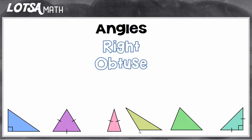The last kind is acute. If you don't see a right angle and you don't see an obtuse angle, it must be an acute triangle. Every angle inside an acute triangle must be acute. Looking at the pink triangle, that angle is acute, that's acute, and that's acute. You can't just see one acute angle and call it acute — they all have to be acute. Even just one obtuse angle makes it an obtuse triangle, and even one right angle makes it a right triangle. But if all three are acute, it's an acute triangle.